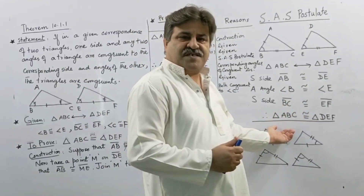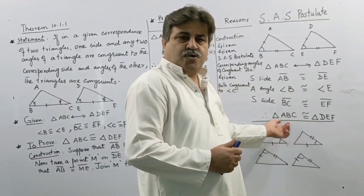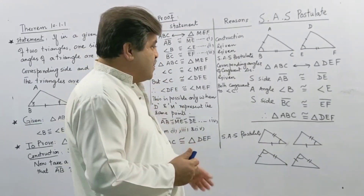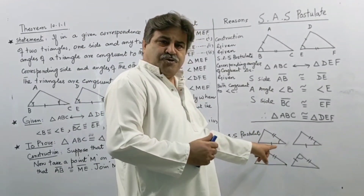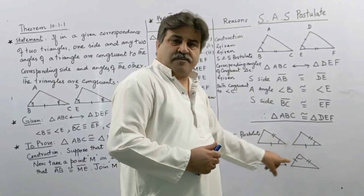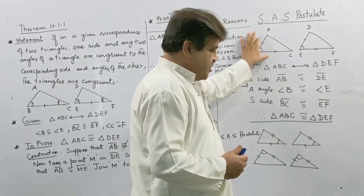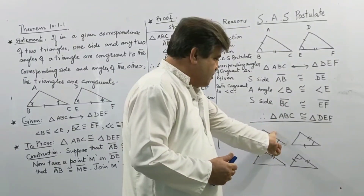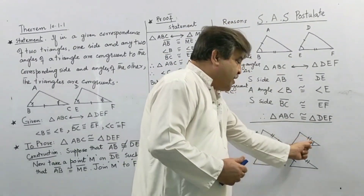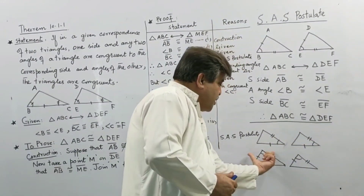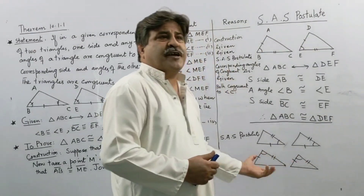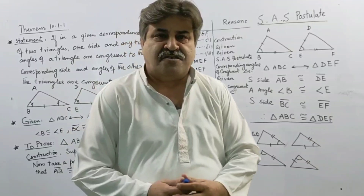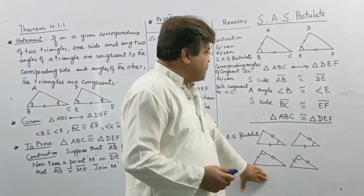We will take the help of this SAS postulate to prove this theorem. There are three possible combinations: not only these two sides, but even these two sides with the included angle congruent, or the other two sides and the included angle. These are the three possible cases of the SAS postulate.